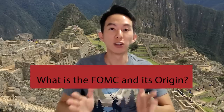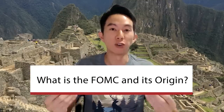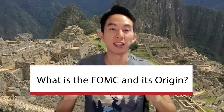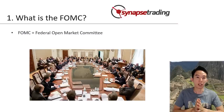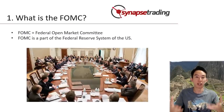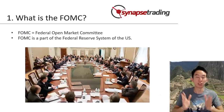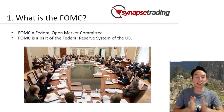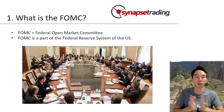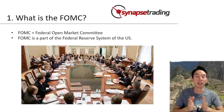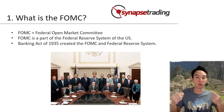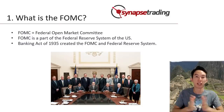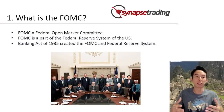So first off, what is the FOMC and its origin? The FOMC is a branch of the Federal Reserve, which is the central banking system of the United States. The FOMC was created by the Banking Act of 1935, which also created the Federal Reserve System.